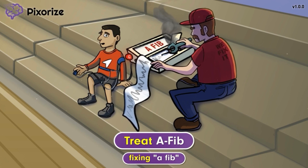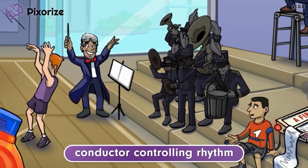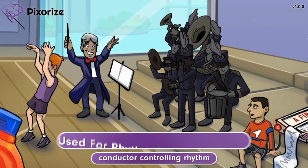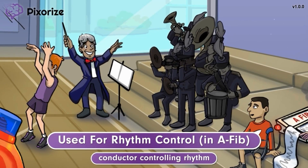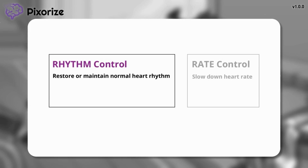Nearby, a music conductor is practicing with the school band ahead of the game tonight. This conductor should help you remember how Dofetilide and Ibutilide are used for rhythm control in the treatment of AFib — after all, his job is to control the rhythm of the music. Rhythm control means these drugs aim to restore or maintain a normal heart rhythm in patients with AFib, in contrast to rate control drugs that simply slow the heart rate. As rhythm control drugs, Dofetilide and Ibutilide are used to actively convert an abnormal AFib rhythm into a normal rhythm, and to prevent a relapse back into AFib.